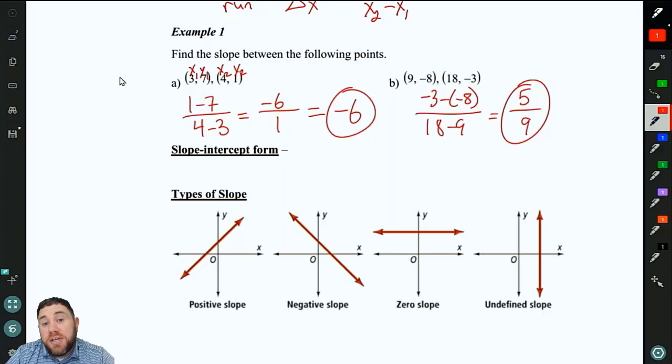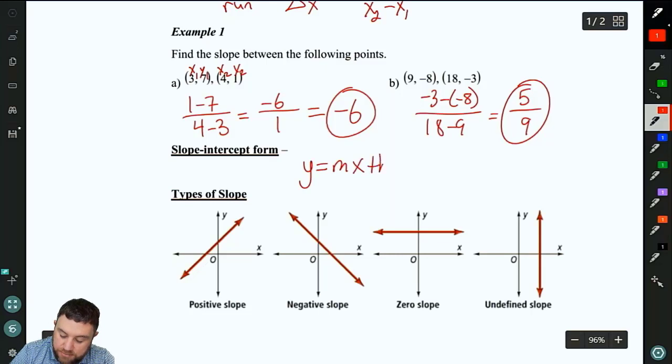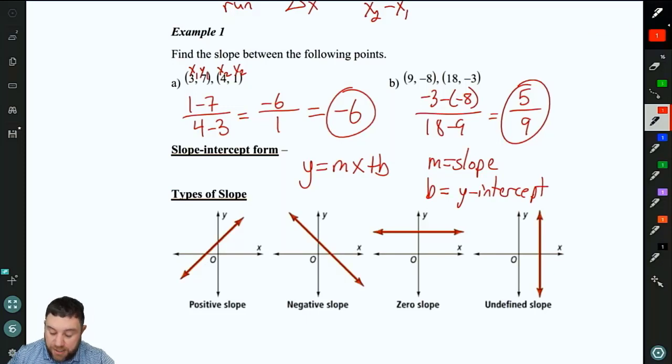For the lines that we'll be working with, we are going to have them in slope intercept form. Remember that's y equals mx plus b. m is the slope, and b is the y-intercept. So b is your starting point. m is which direction you go.